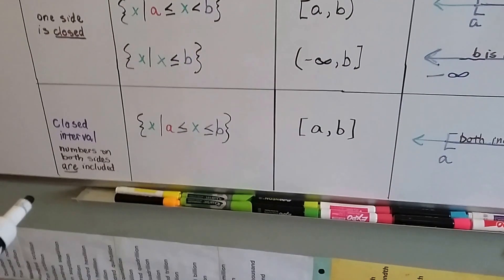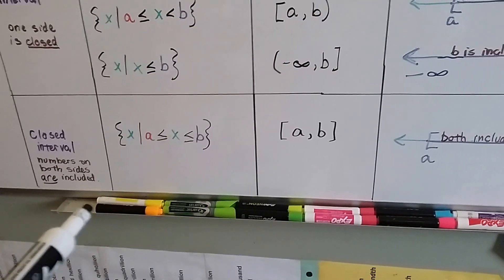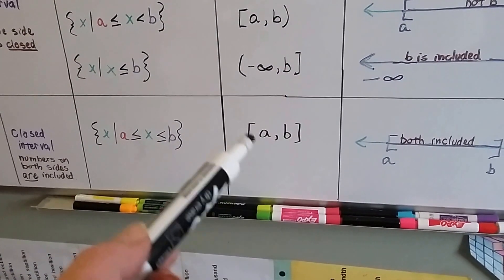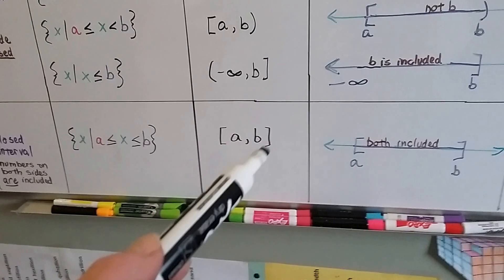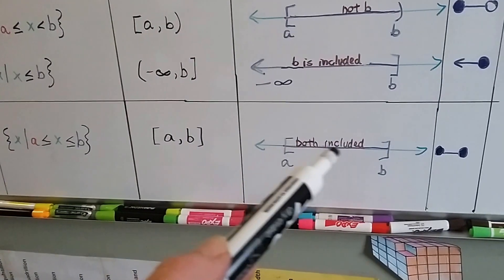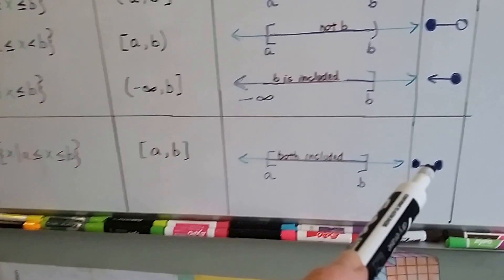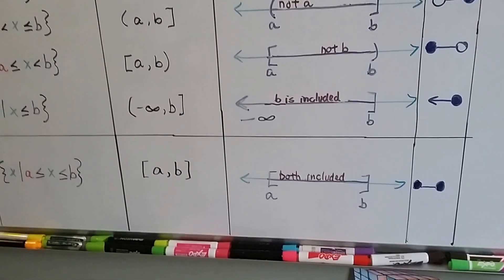If it's a closed interval, then the numbers on both sides are included, and we have an interval notation with brackets on both sides of a and b. So, x is equal to anything in here including a and b. They're both included, and then we have our interval with two filled-in dots.